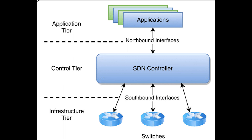The application layer contains programs that communicate their desired network behavior and network requirements to the SDN controller, which exists in the control layer. This is where load balancers, firewalls, intrusion detection, and other standard network applications are located.